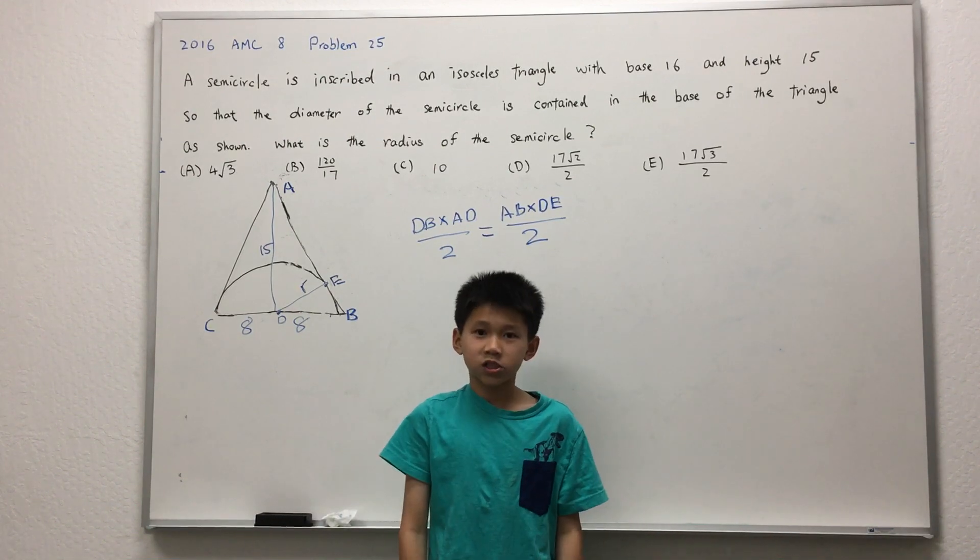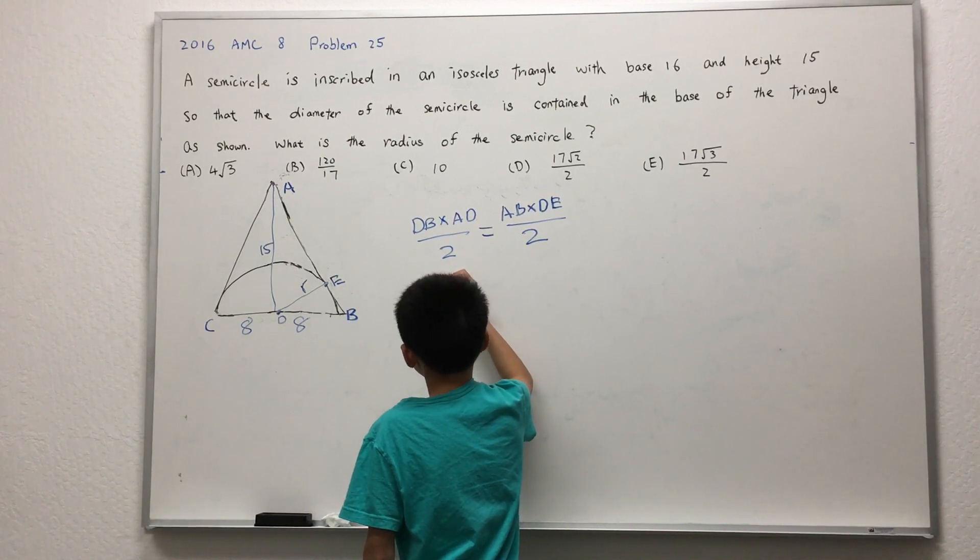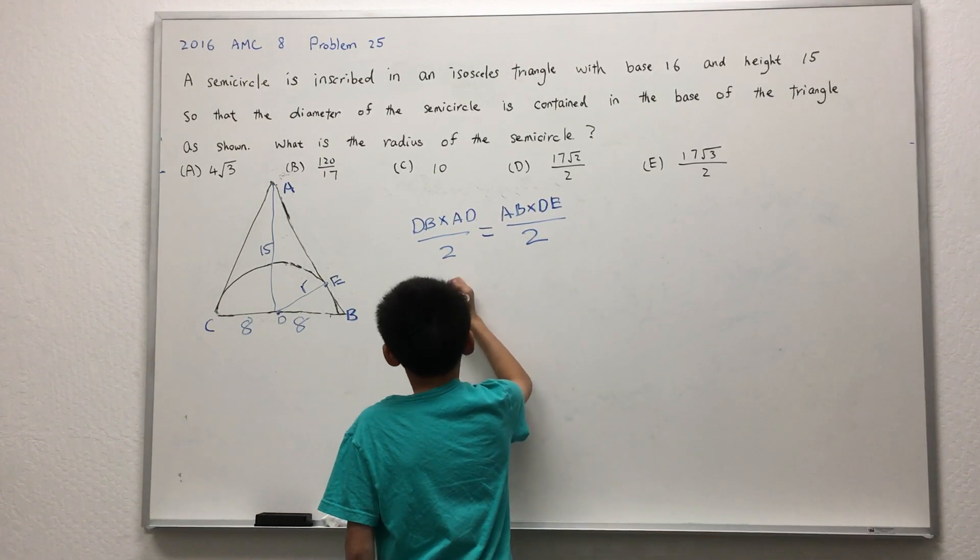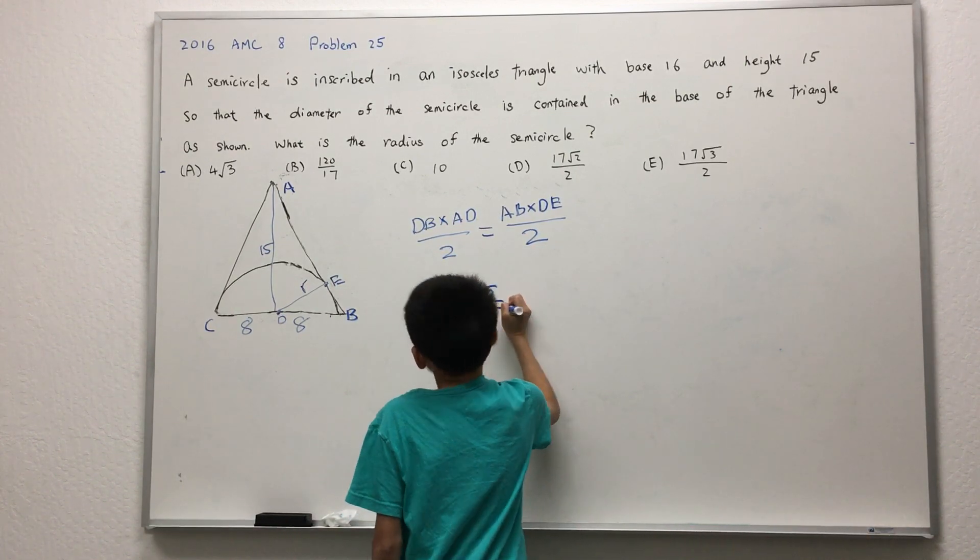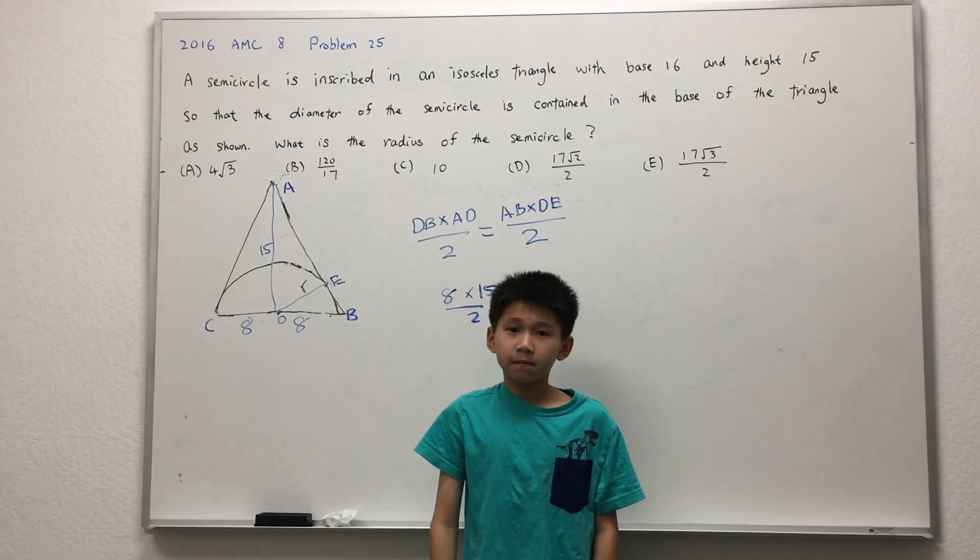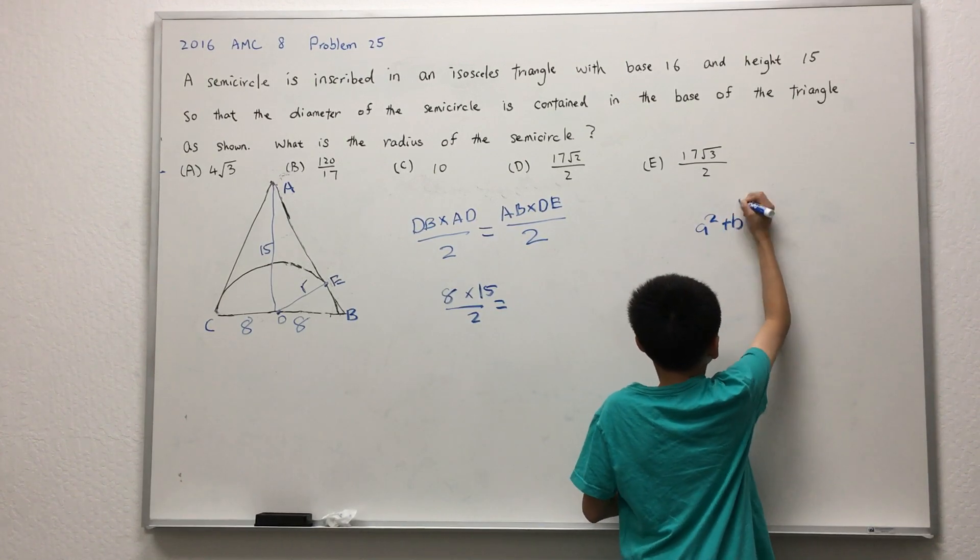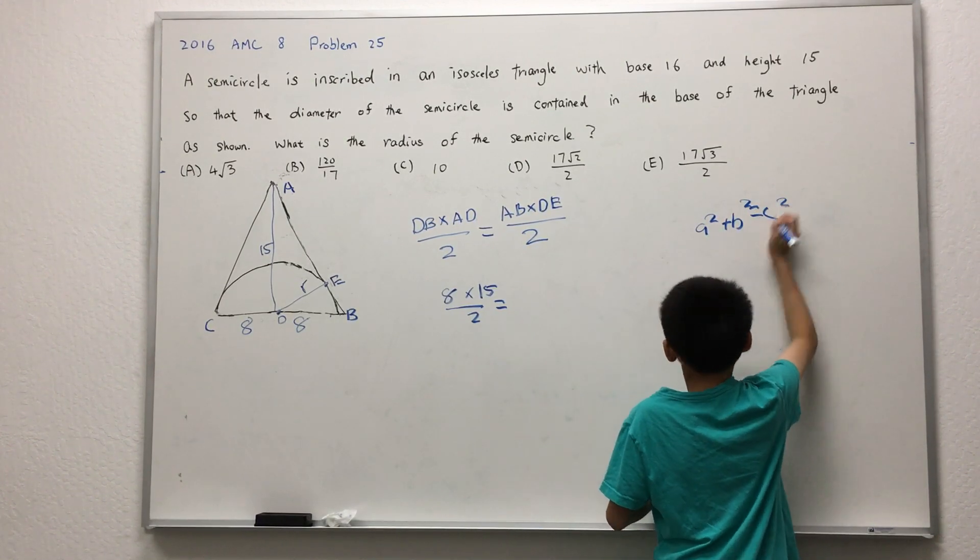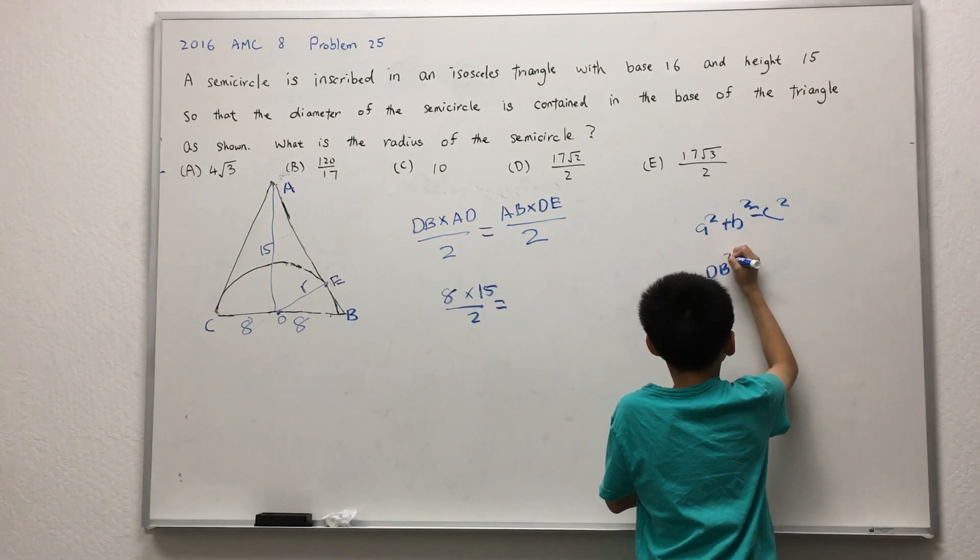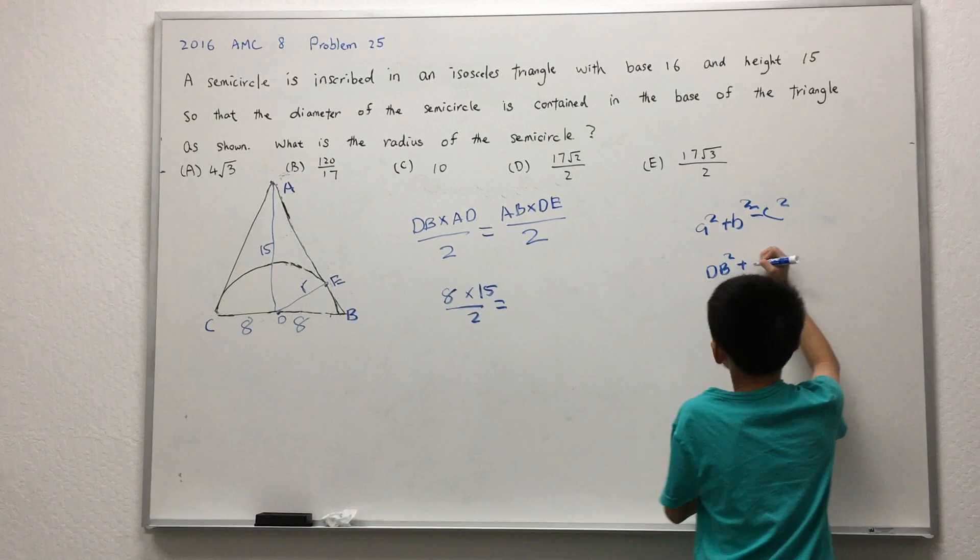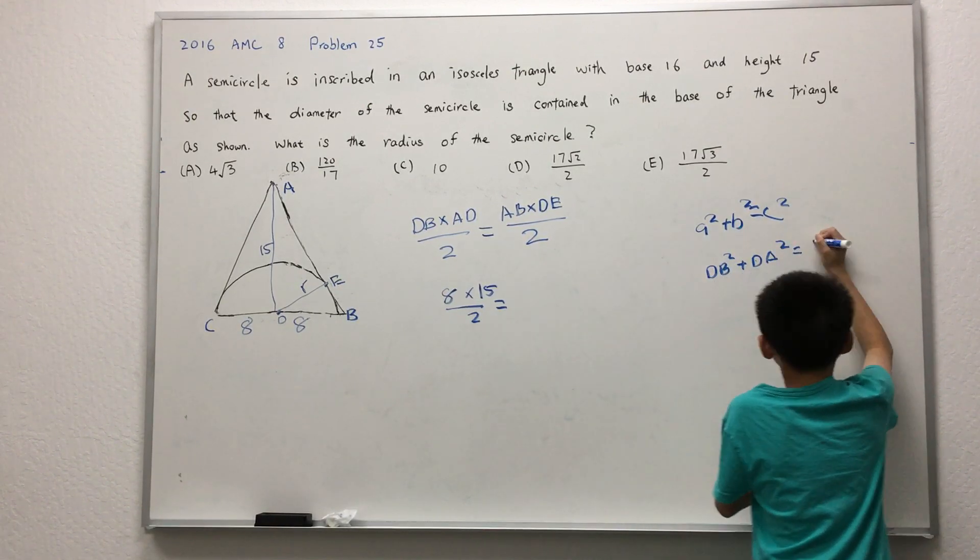Now, let's do some number crunching. We substitute the values of DB and AD into the equation. DB is 8, AD is 15. We can find line segment AB by the Pythagorean theorem. A squared plus B squared equal to C squared. A in this case is equal to DB, and B in this case is equal to DA. C is equal to AB.